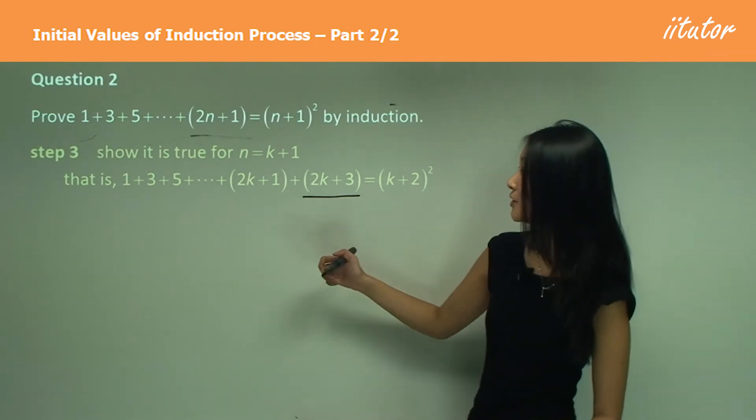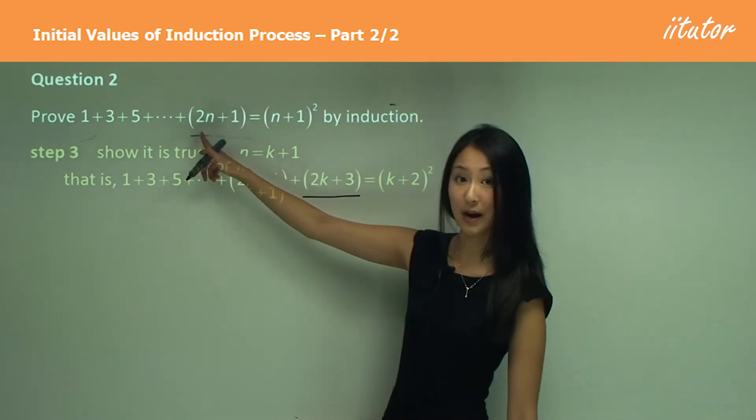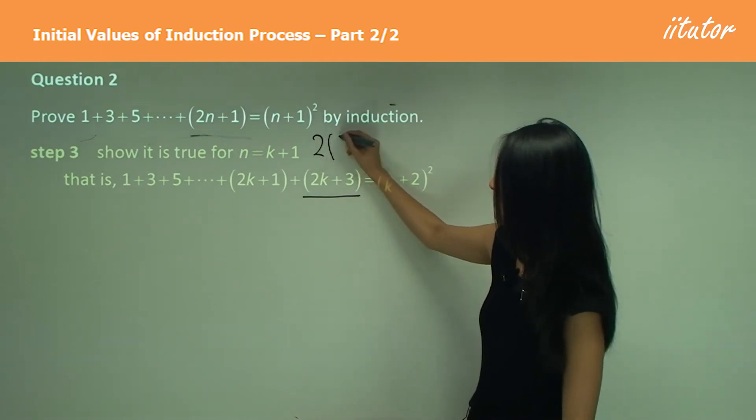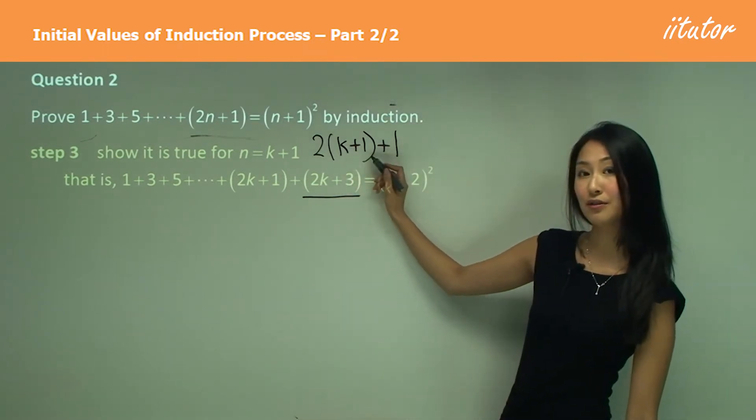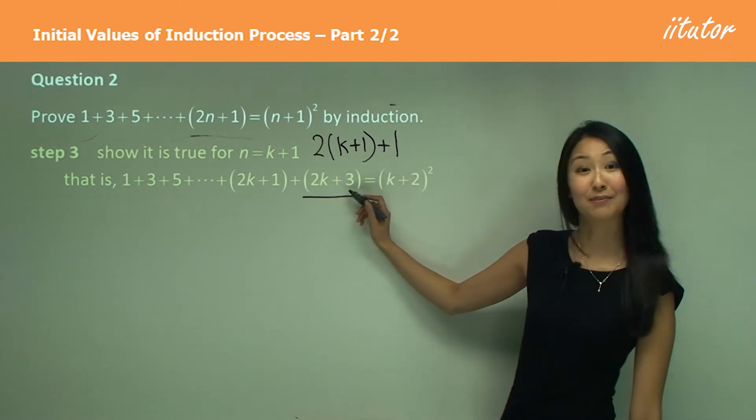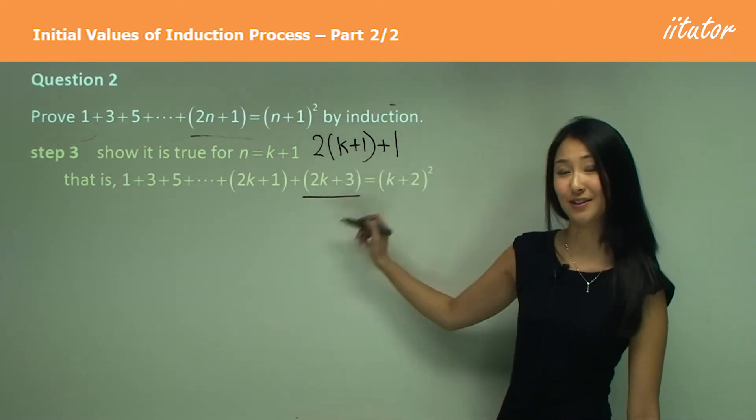And so we just substitute k plus one into this equation here. So we have two multiplied by k plus one plus one. So that becomes two k plus two, plus another one becomes two k plus three. So we've just worked out our extra term.